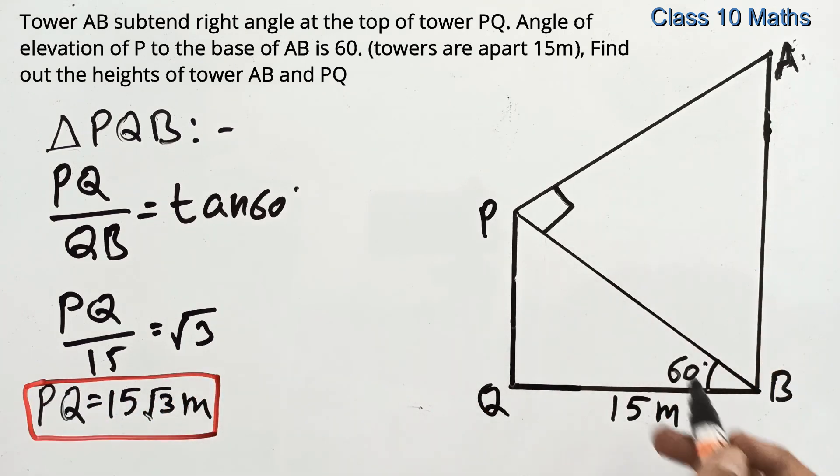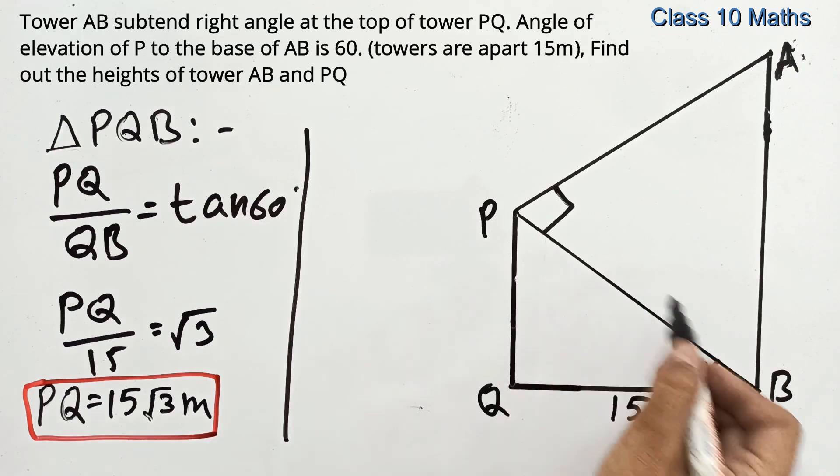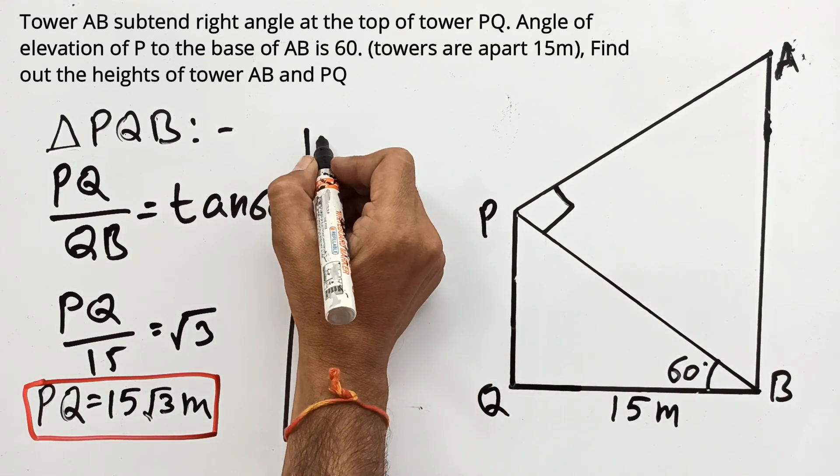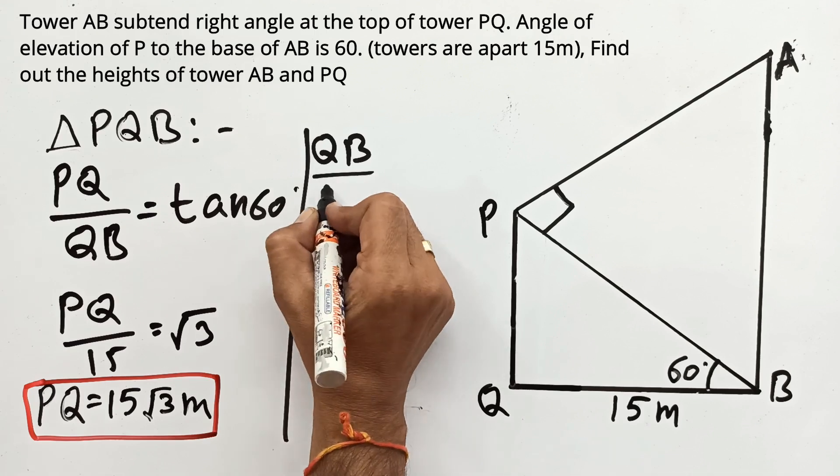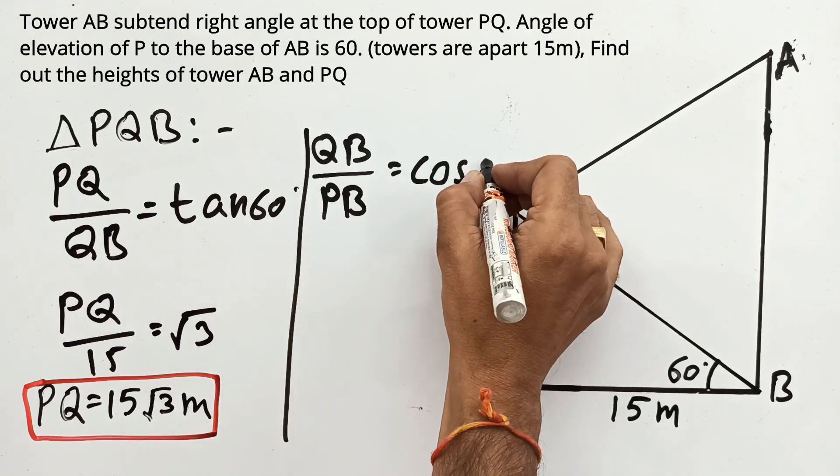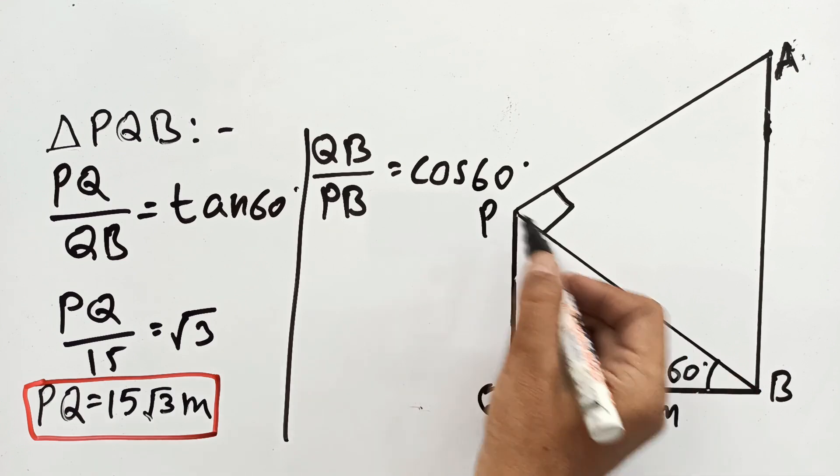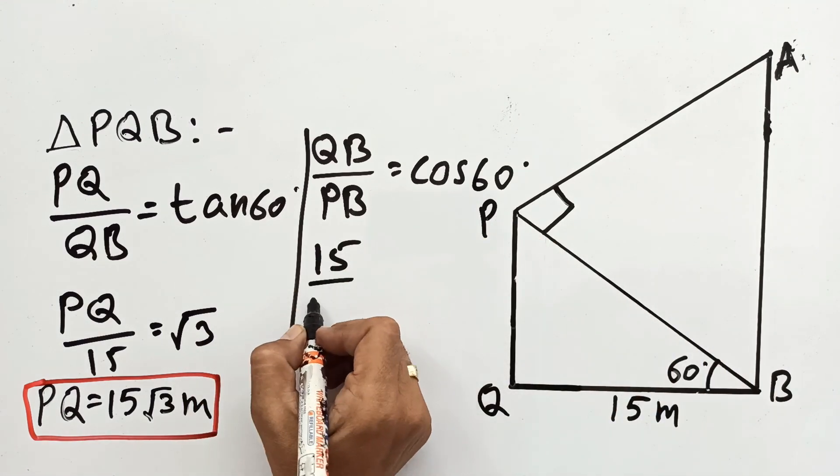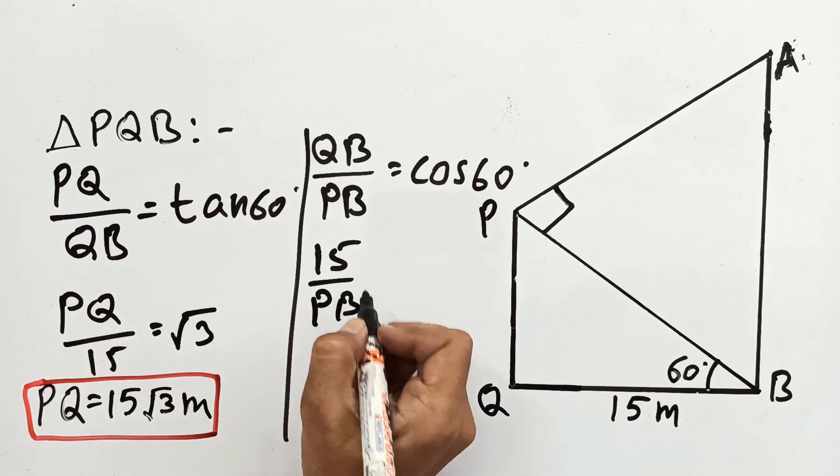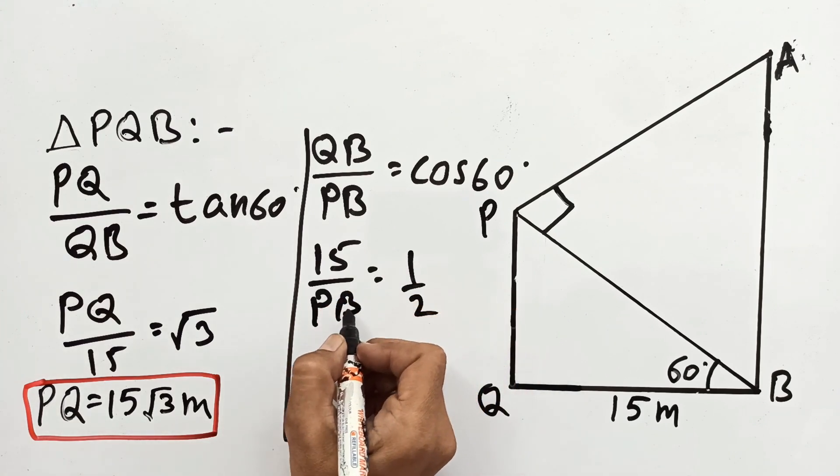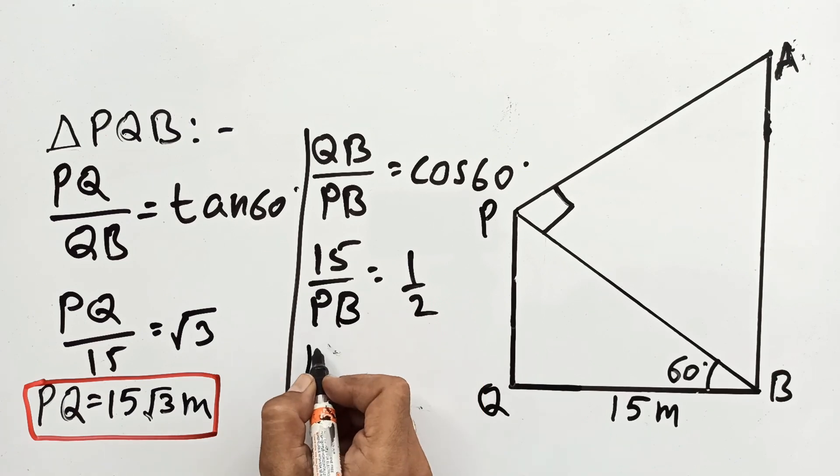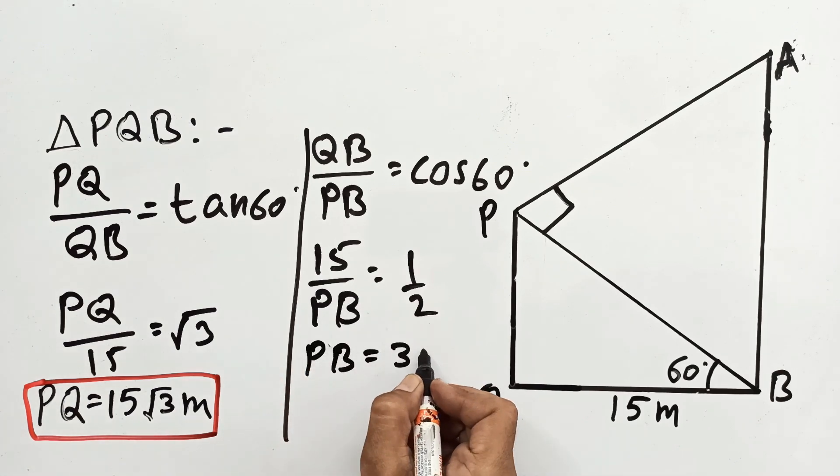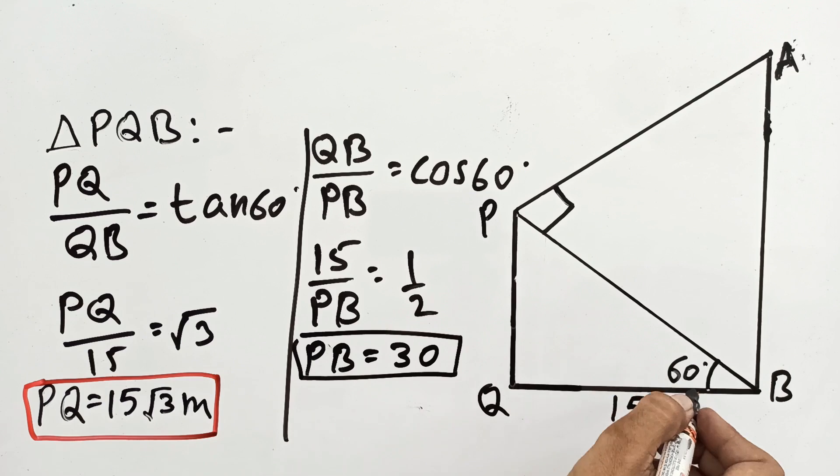Now in order to find out AB, let us first find out PB. So again in the same triangle, base upon hypotenuse, QB upon PB is cos 60. So it is 15 upon PB. This is equal to 1 by 2, cos 60 is 1 by 2. Therefore PB is 30.